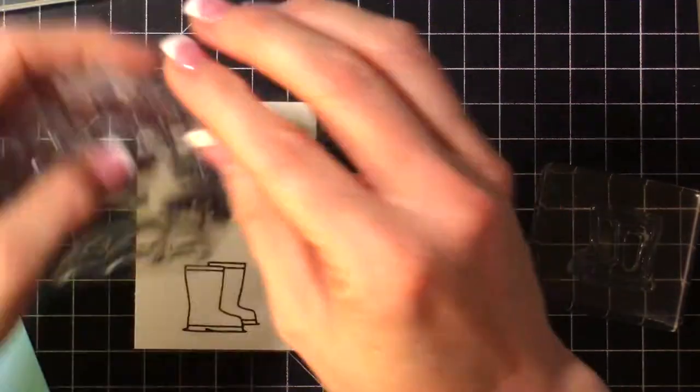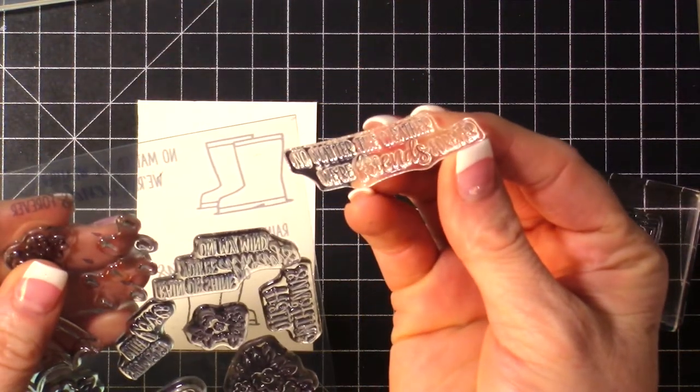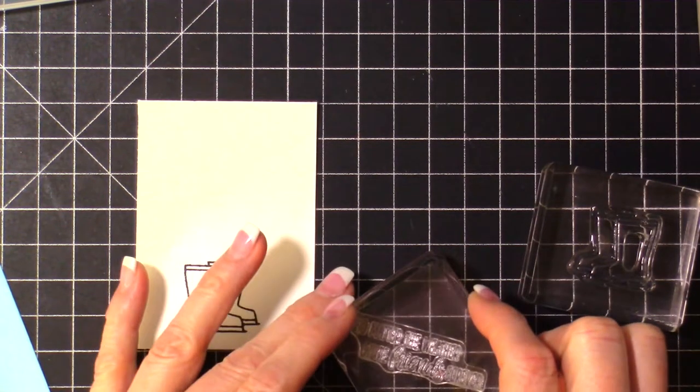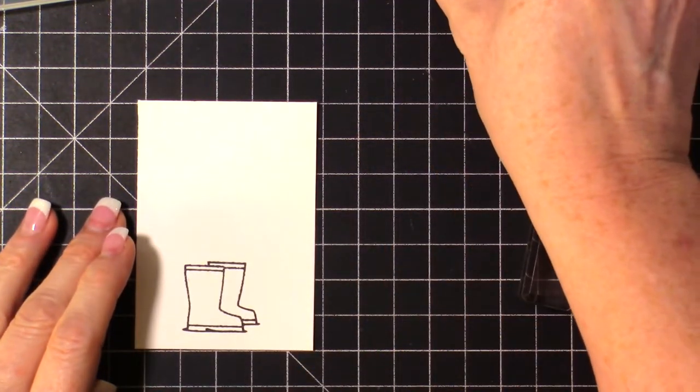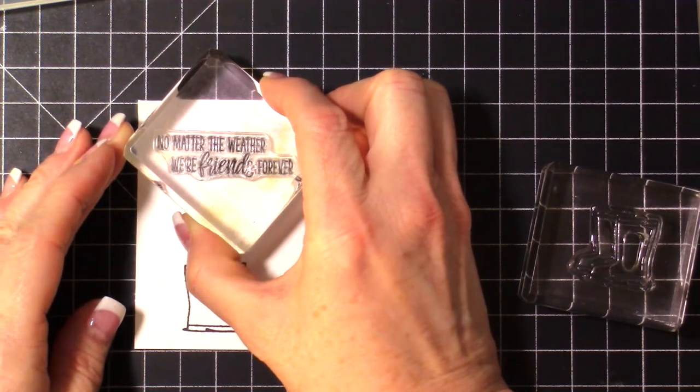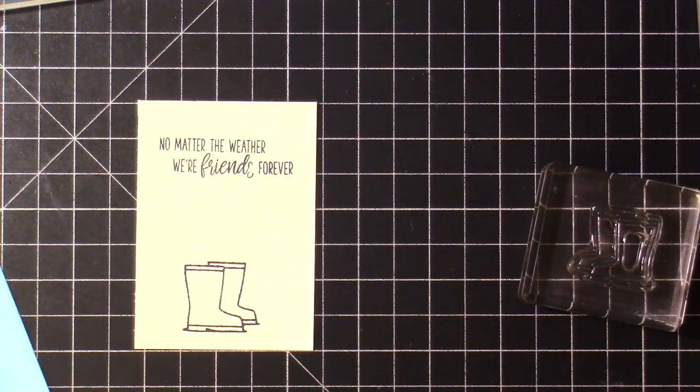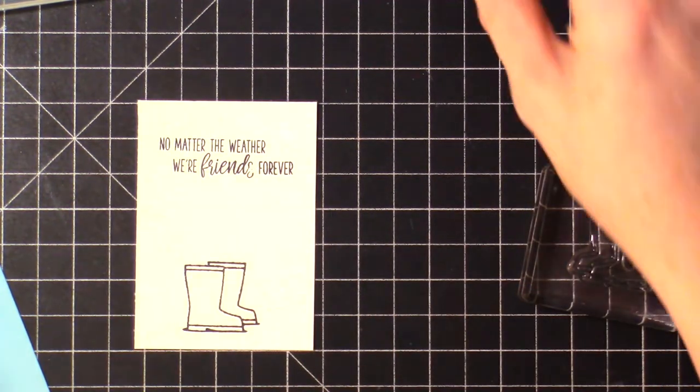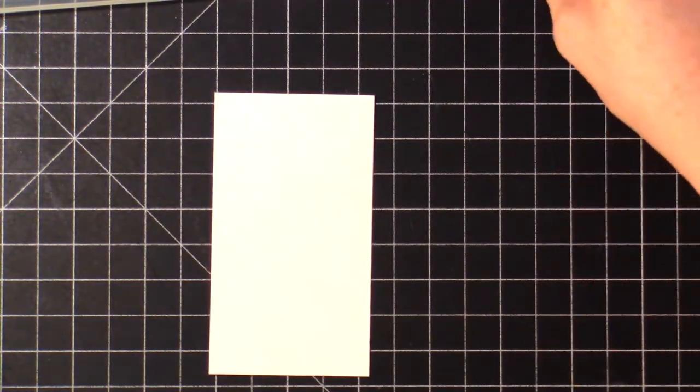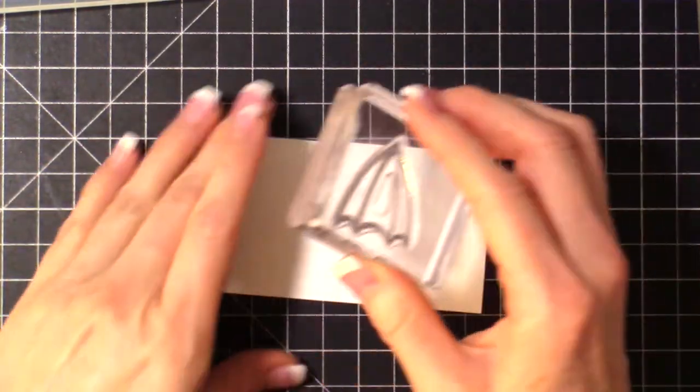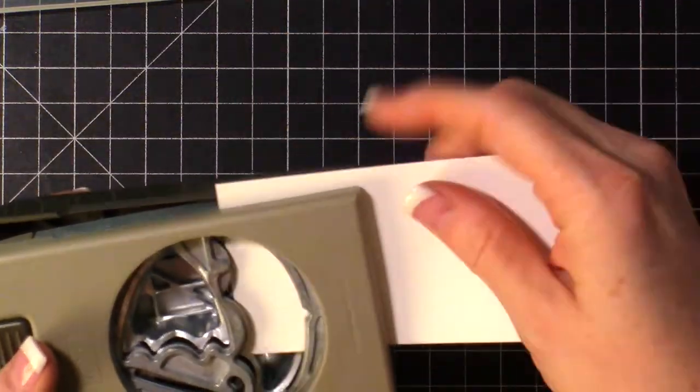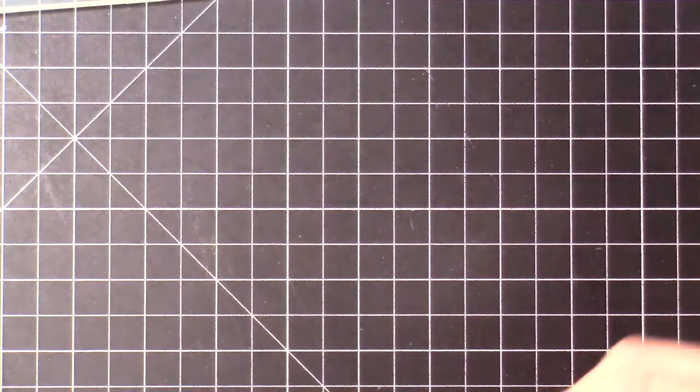I'm going to stamp that in Memento Black ink because that is the best ink to use when you are using your blends to color. It is safe to use. I'm going to stamp that down on this piece towards the bottom. We're going to add some other layering pieces to this. Then we're also going to stamp our sentiment. You can pick any of the sentiments in the stamp set. I'm going to stamp that in Memento Black ink.